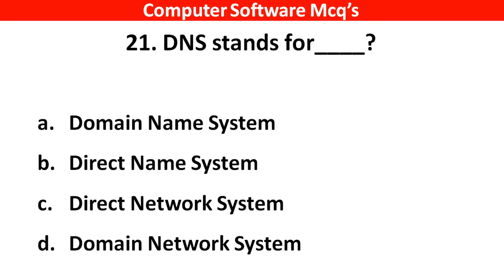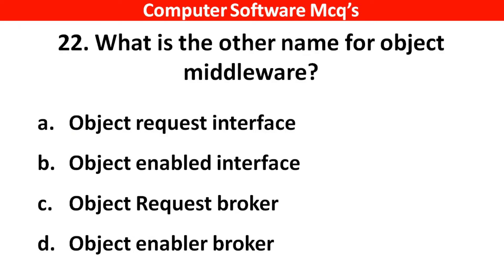DNS stands for? Right answer is option A: Domain name system. Next question: What is the other name for object middleware? Right answer is option C: Object request broker.